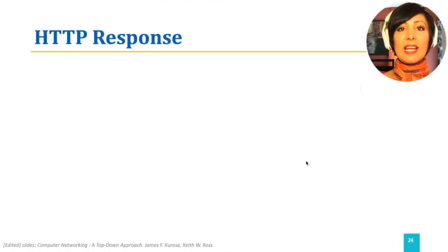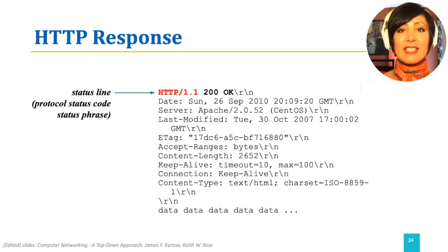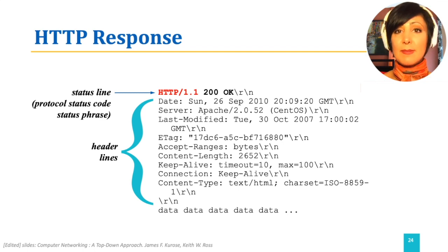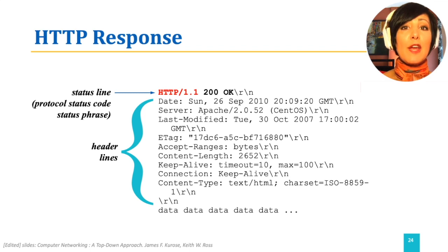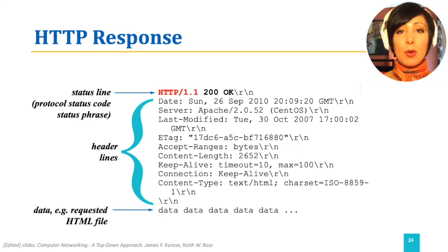Now let's take a look at an example HTTP response message. The HTTP response message starts with a status line indicating the version of HTTP, a status code, and a status phrase. Next, the header lines include information about the server, like the date and timestamp of when the response message was created, the content type and length, and whether a persistent connection was used — and if so, how long it will keep the connection alive. The header lines are followed by the data part, which is the requested object.